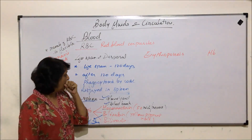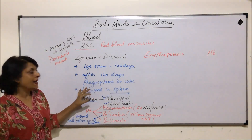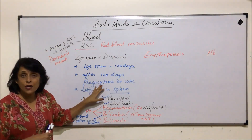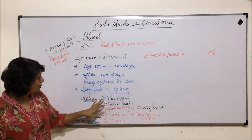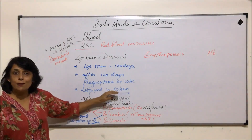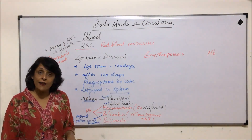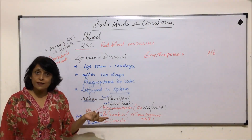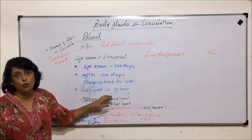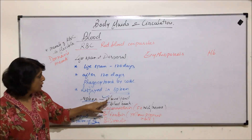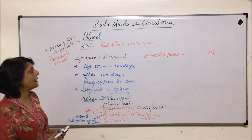RBCs have a lifespan of 120 days. After 120 days they are destroyed — they undergo phagocytosis by phagocytes like WBCs. Destruction takes place in the spleen, which is the same organ where they are produced in the fetal stage. After birth, RBCs are stored there and also destroyed there, which is why the spleen is known as the graveyard as well as the blood bank.